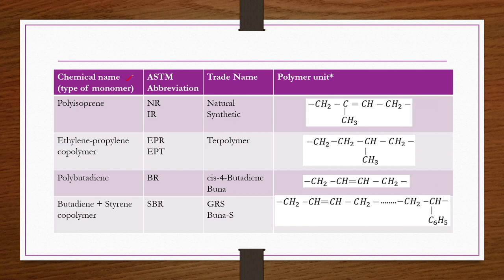The first column is the chemical name or type of monomer, the second is the ASTM abbreviation, the third is the trade name, and the final column is the polymer unit. The first entry is polyisoprene. Its ASTM abbreviation is NR if natural and IR if synthetic. The repeating polymer unit is CH2-C(CH3)=CH-CH2. Isoprene production was already discussed in a previous chapter.